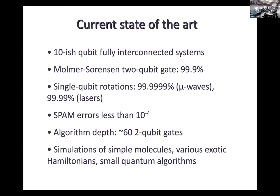These numbers aren't what you'd get from an actual working 10 or 20 qubit quantum computer on some days — the numbers for that would be lower. These are the best results achievable at the moment, coming from different labs. The 99.9% is from NIST; single qubit rotations are from Oxford and NIST; and the SPAM errors — state preparation and measurement errors — are also from Oxford. As for how many operations can be done on a 10-qubit quantum computer, the number is about 60 two-qubit gates. After that, the error rate is such that coherence is basically lost.